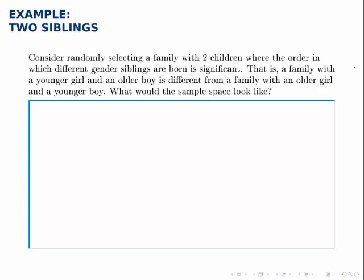What would the sample space look like for this family? In other words, what are the different possibilities for children that this family could have?